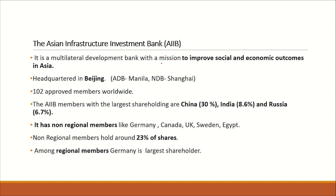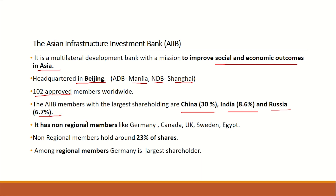Asian Infrastructure Investment Bank has a mission to improve social and economic outcomes in Asia, headquartered in Beijing. The Asian Development Bank is headquartered in Manila, and the New Development Bank (BRICS Bank) is headquartered in Shanghai. AIIB has 102 approved members worldwide. The largest shareholder is China, India is the second largest, and Russia is the third. Non-regional members — including Germany, Canada, UK, Sweden, and Egypt — hold 23% of its shares, with Germany being the largest non-regional shareholder.